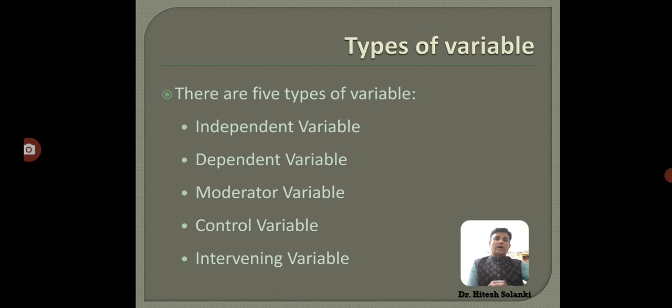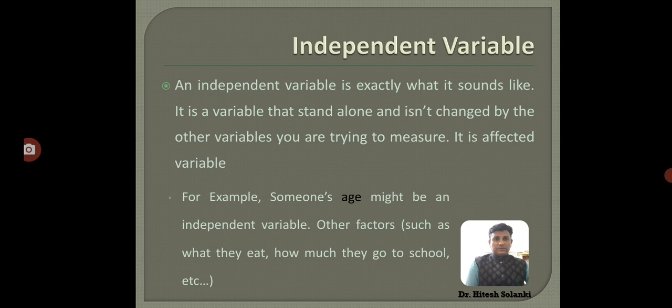Now there are so many types of variables. We are going to discuss about the five types of variable: that is independent variable, dependent variable, moderator variable, control variable, and intervening variable. Now we will discuss in detail the types of variable.